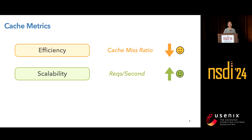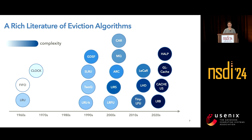Besides efficiency and scalability, I also want to talk about simplicity. Although it is not often used as a metric, simplicity is important for cache. Because of the importance of cache, over the past six decades, numerous cache eviction algorithms have been developed. After some very simple eviction algorithms were proposed in the 1960s, this area keeps evolving — especially in the past two decades, there are a lot of new algorithms. We use color density to indicate the complexity of each algorithm: the darker the color, the more complex the algorithm. Cache eviction algorithms are getting more and more complex. Even though new algorithms usually have higher efficiency, their complexity brings a lot of trouble.